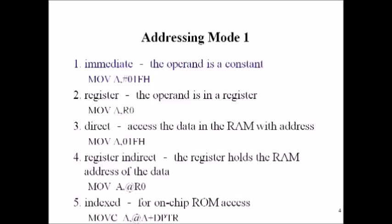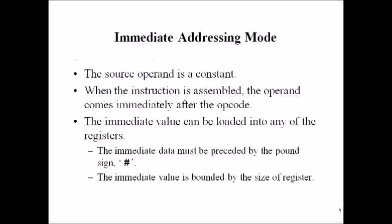In a two-operand instruction, operand two acts as the source and operand one acts as the destination. In immediate addressing mode, the data value is included within the instruction, or given as an immediate value within the instruction. The source operand field contains this data value. The source operand is a constant; when the instruction is assembled, the operand comes immediately after the opcode, preceded with a pound sign.